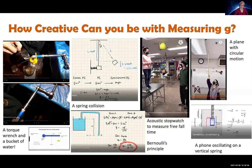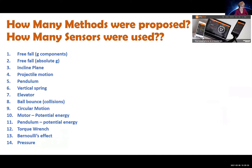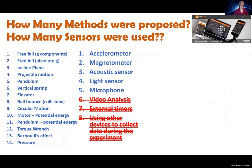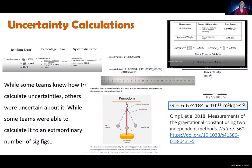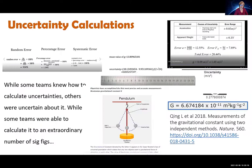We were stunned by the quality. Students came up with 14 different ways of measuring g — I couldn't believe it. Some were not valid; for example, if they used video analysis or external devices we didn't count those. But it was still very creative — for example, students who used elastic collisions, dropped a ball, and used the acoustic sensor to calculate g from how long the ball took to bounce. Amazing, even the discarded ones.